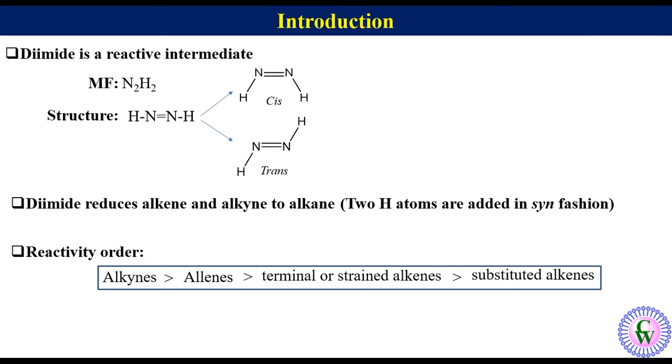If we talk about the relative reactivity of cis and trans isomers, in general, trans-alkenes are more reactive than cis-alkenes. The only reported exceptions are cis and trans-2-butene.